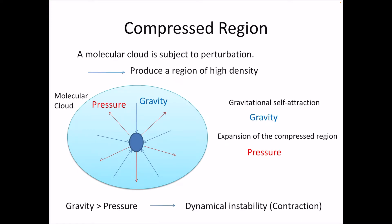Now we consider the compressed regions inside a molecular cloud. The molecular cloud is subject to perturbations due to collisions between molecular clouds, encounters with the spiral arms of galaxies, or shock waves from supernova explosions. Some regions inside the molecular cloud are compressed, producing regions of higher densities. We consider the competition between two forces: gravity pulls the gas toward higher densities, accumulating gas in higher density regions, while pressure prefers to expand the object into larger volumes. These two forces act on the gas in opposite directions.